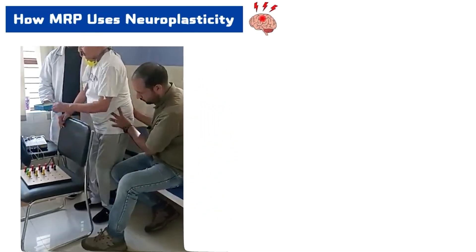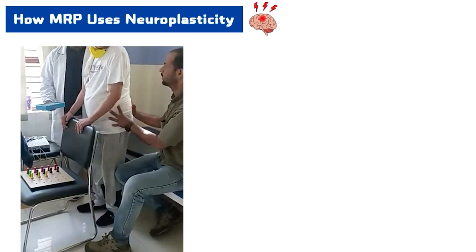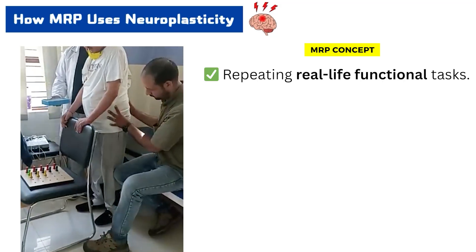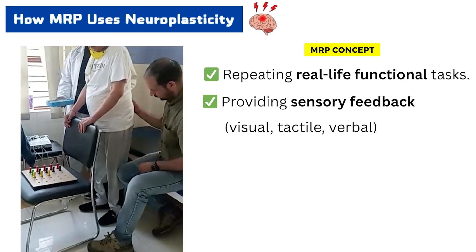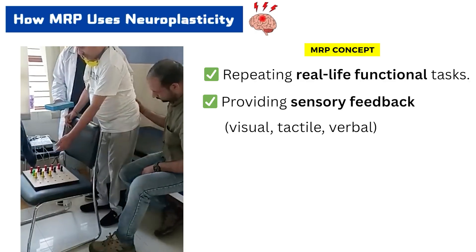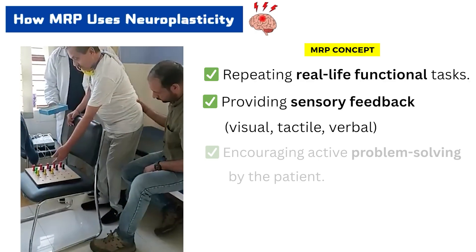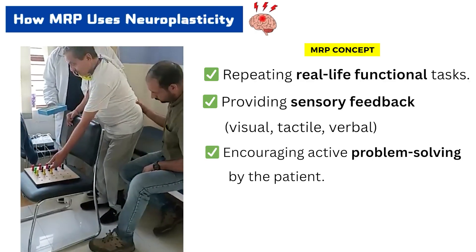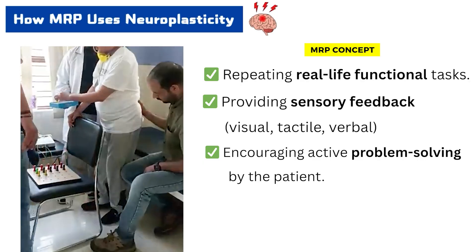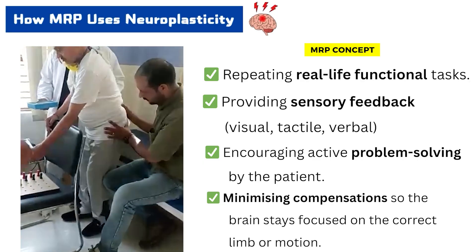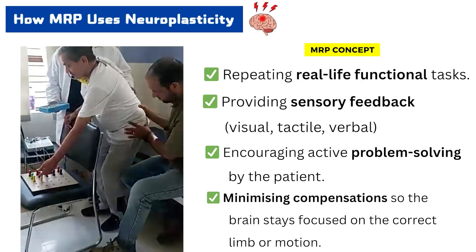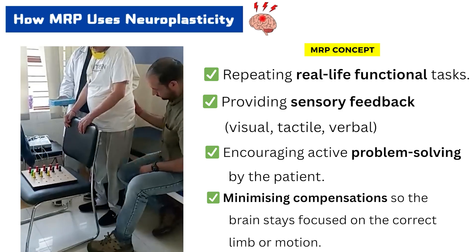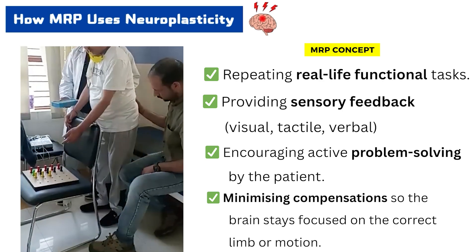MRP uses neuroplasticity by repeating real-life functional tasks, providing sensory feedback — visual, tactile, and verbal — encouraging active problem solving by the patient, and minimizing compensation so the brain stays focused on the correct limb or motion. These are some core concepts of the MRP approach in neurorehabilitation.